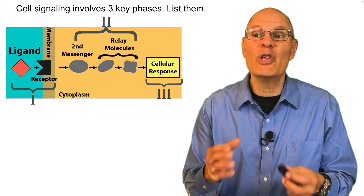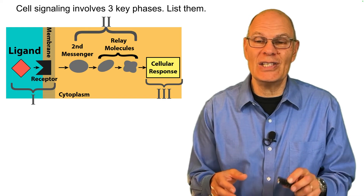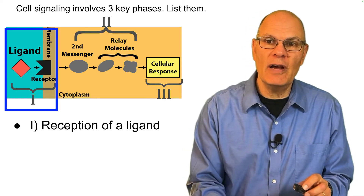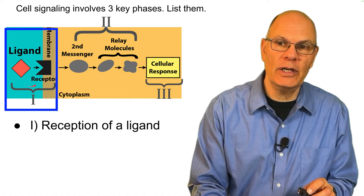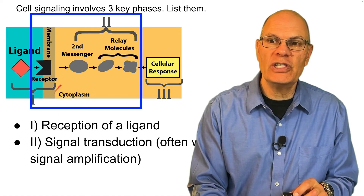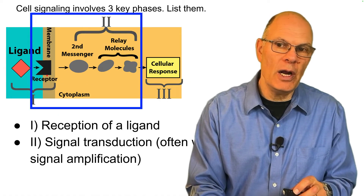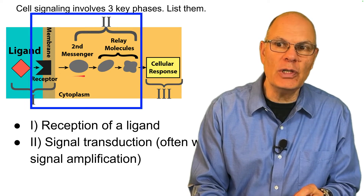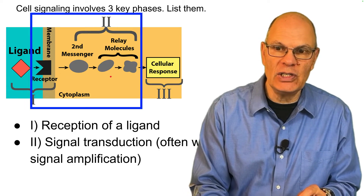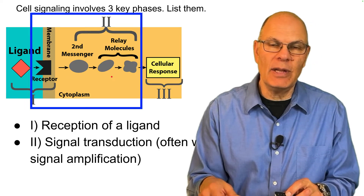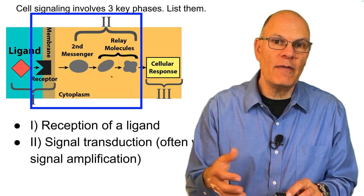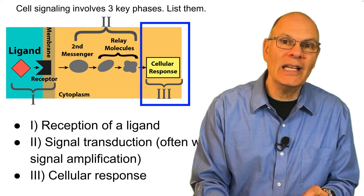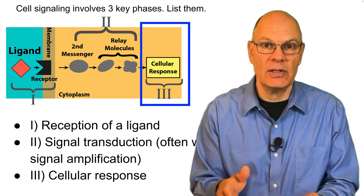Cell signaling involves three phases. The three phases are: reception of a ligand, signal transduction — where the initial message gets changed into another kind of message that can enter the cytoplasm, often involving amplification of the signal — and finally, a cellular response.